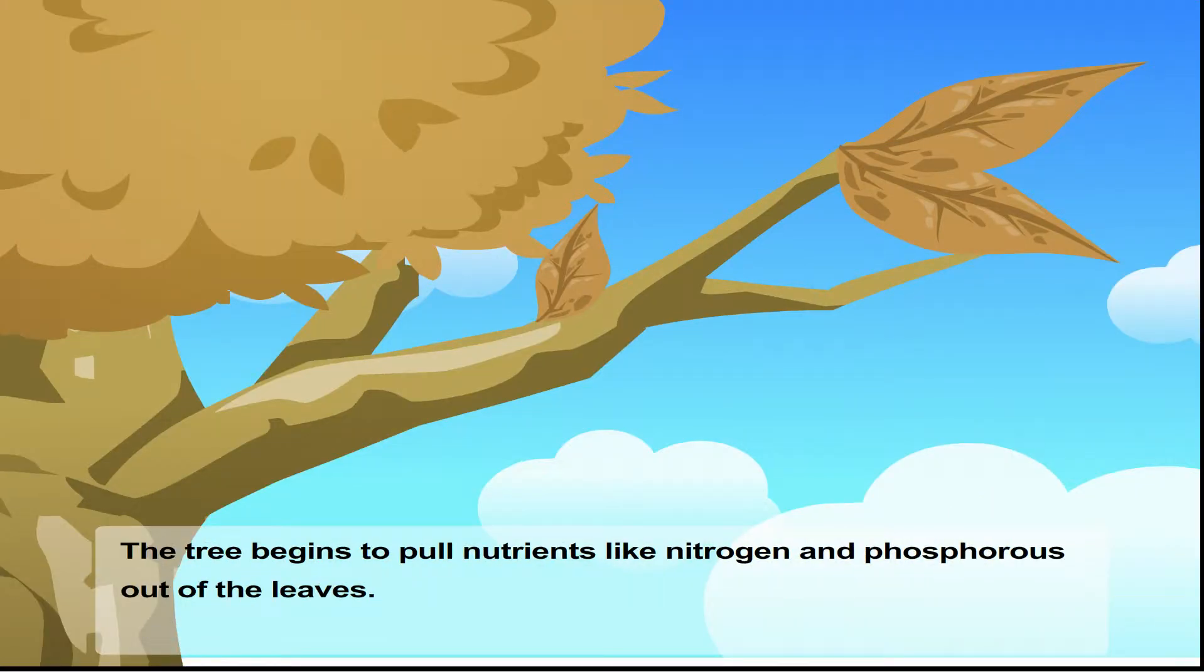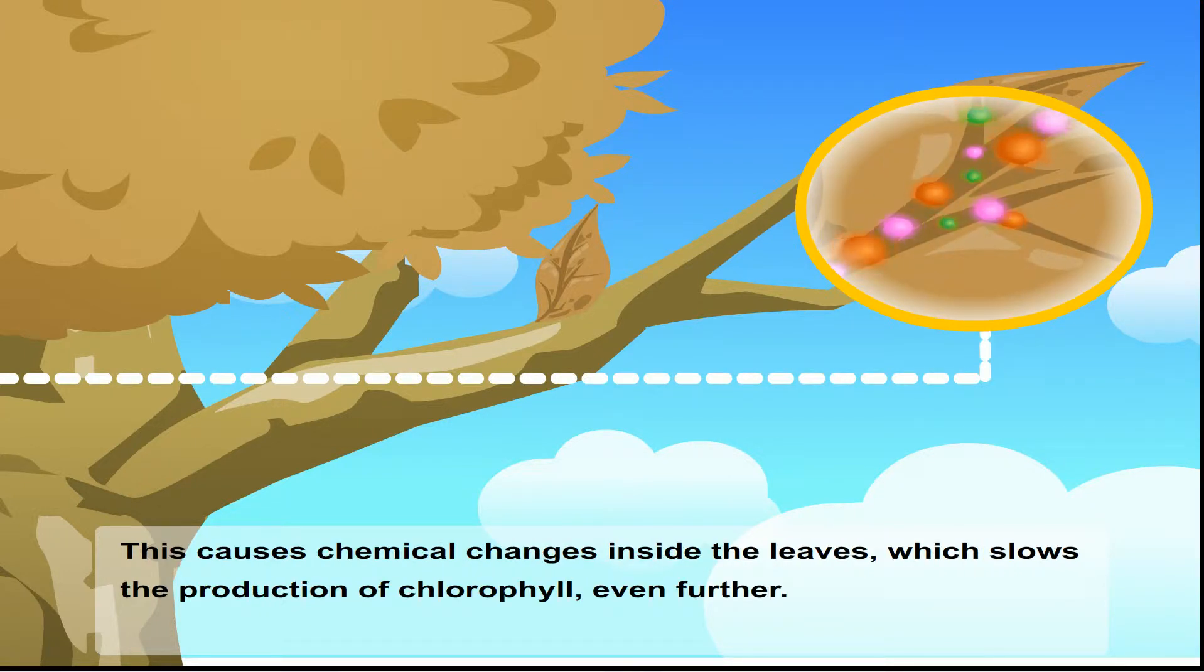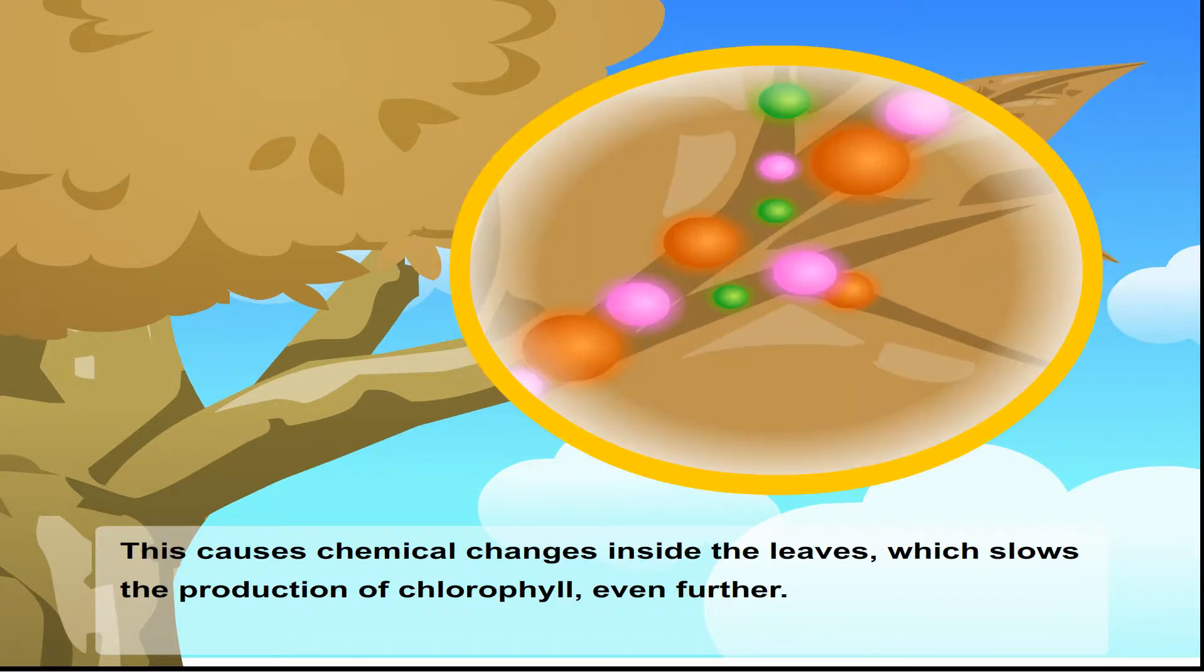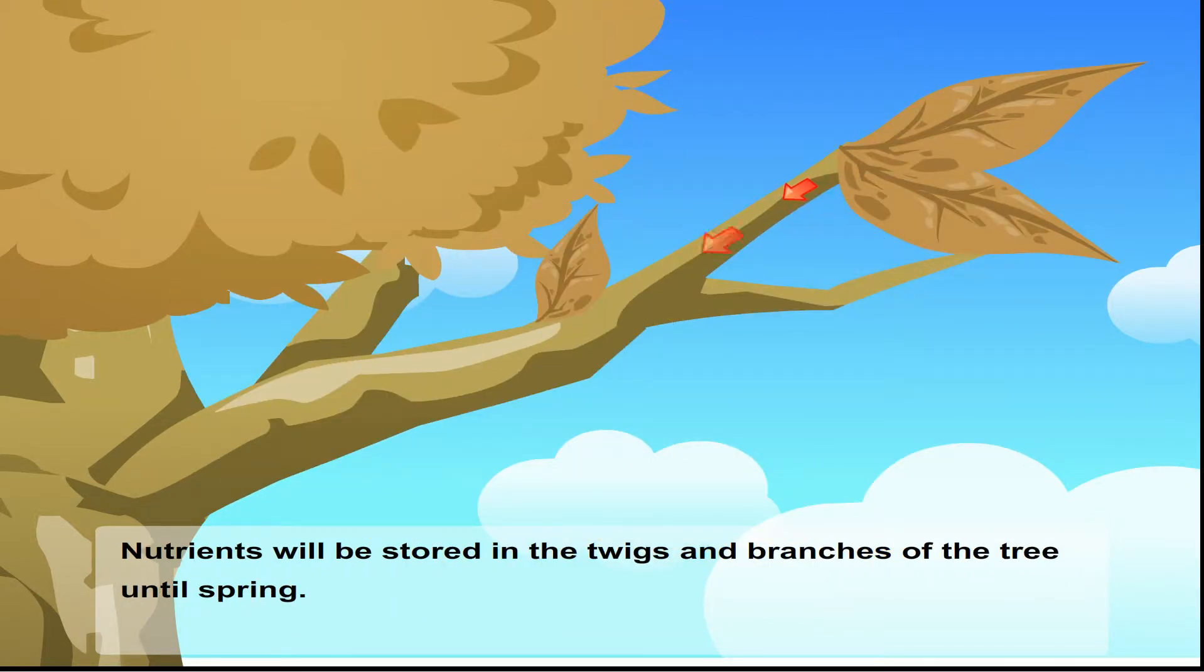The tree begins to pull nutrients like nitrogen and phosphorus out of the leaves. This causes chemical changes inside the leaves, which slows the production of chlorophyll even further. Nutrients will be stored in the twigs and branches of the tree until spring.